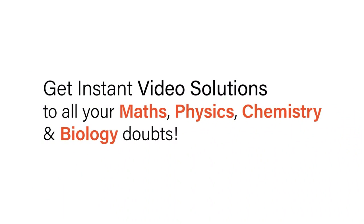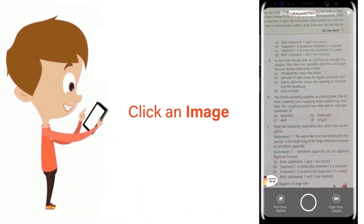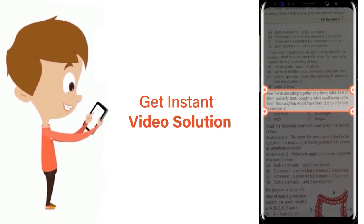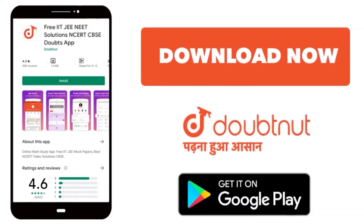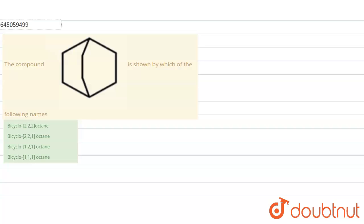With Doubtnet, get instant video solutions to all your math, physics, chemistry, and biology doubts. Just click the image of the question, crop the question, and get instant video solution. Download Doubtnet app today. Hello everyone, in this question one compound is given and we have to write its IUPAC name.